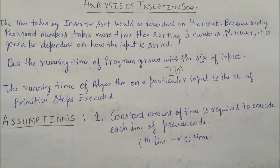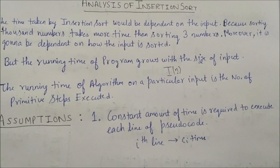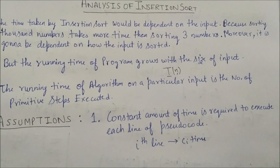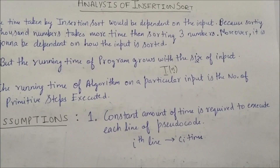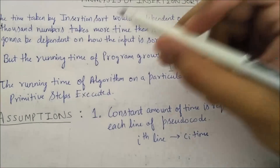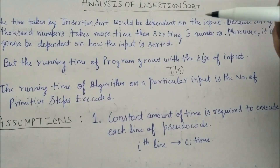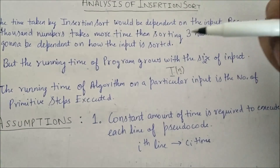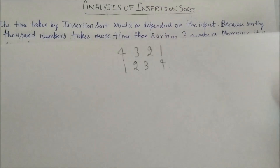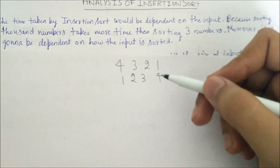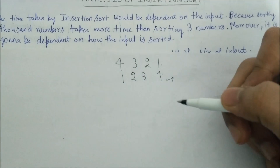We will analyze the insertion sort algorithm and discuss its time complexity. The time taken by insertion sort is dependent on the input — sorting a thousand numbers takes more time than sorting three. Moreover, it depends on how the input is sorted: the sequence 4, 3, 2, 1 would take more time to sort than 1, 2, 3, 4.